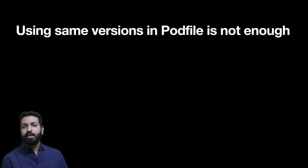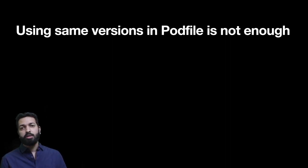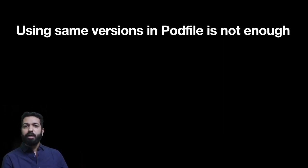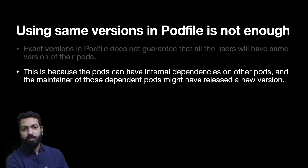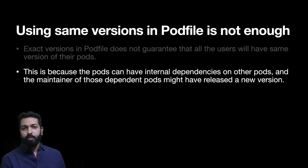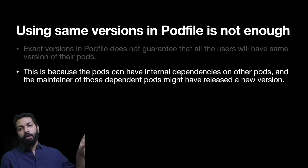Now let's understand an important concept: having an explicit version in the Podfile does not guarantee all developers will use the same version of a pod. Some argue there is no need to push Podfile.lock because they have already pushed the Podfile with explicit versions against each pod. But there is a catch — exact versions in the Podfile will not guarantee the same pod version because the pods you use might have internal dependencies on other pods. For example, pod A may have an internal dependency on pod A1.